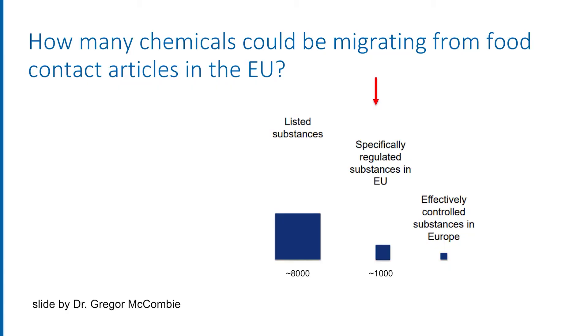Some of these have been authorized by different EU member states, while some are not explicitly authorized in others. About 1,000 substances are explicitly authorized for use in food contact across the whole EU, meaning they have been assessed for migration and health impacts by EU authorities. But such an assessment may have been carried out decades ago, and unfortunately this list is not systematically updated at the moment.